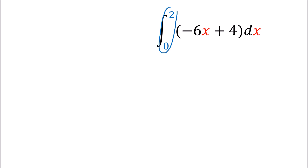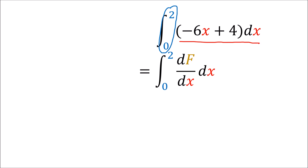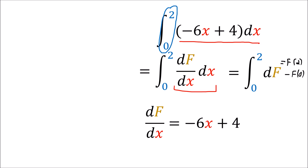Now let's compute it with the new interpretation using differential forms. We have this integral with our path endpoints and our differential form. This expression can be viewed as the derivative of some function f with respect to x, so all of this can be rewritten as just df. This integral is really simple if we can figure out what f is — it would just be f of 2 minus f of 0 by the fundamental theorem of calculus.